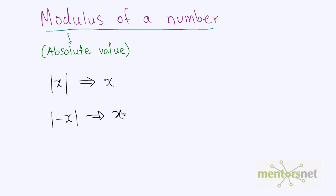So what you can infer from this is that the modulus or the absolute value of a number gives you the magnitude of that number. That is, you get the value of that number regardless of the sign.